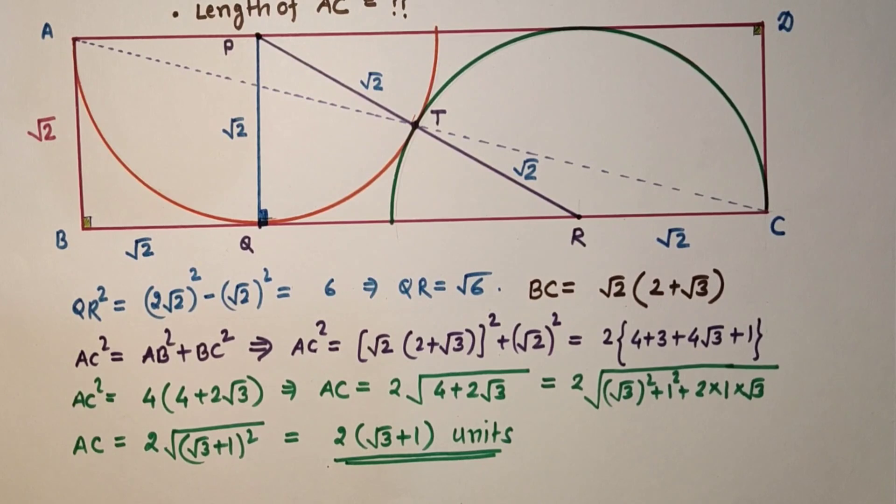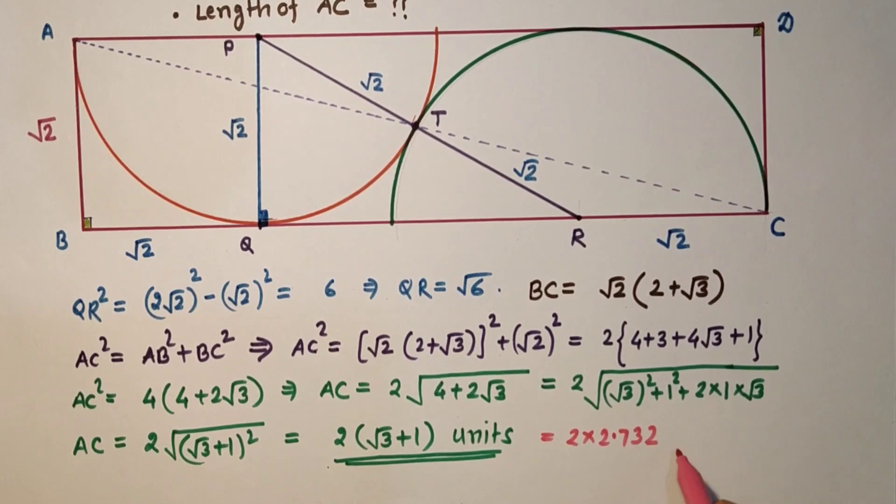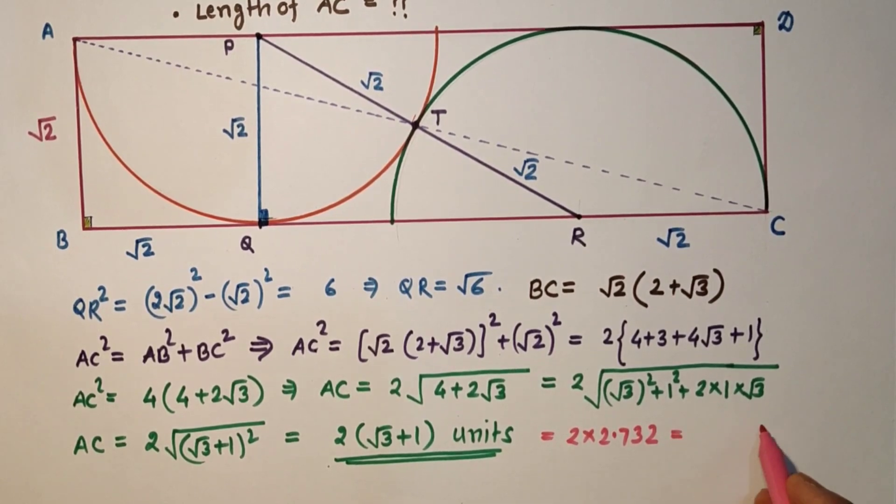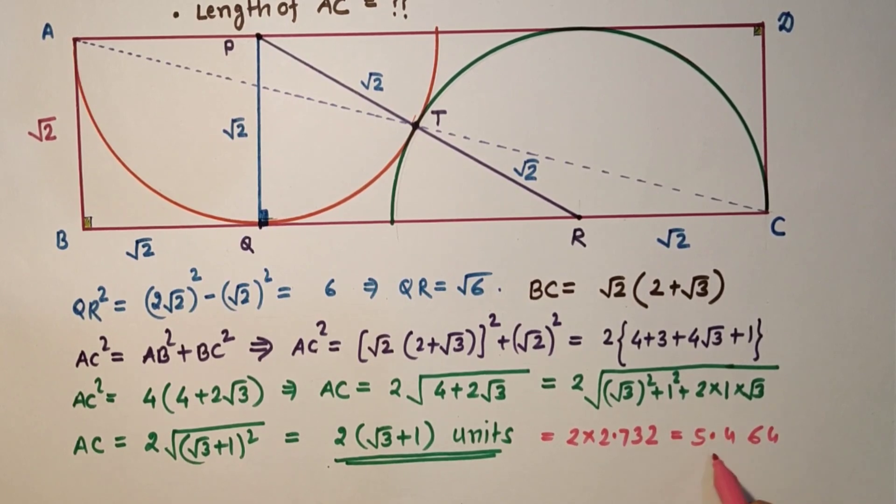If we simplify it, root 3 is 1.732, so 2.732 times 2, which is 2 times 2.732, which is 5.464 units.